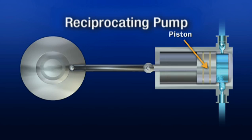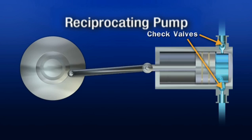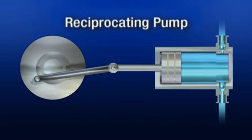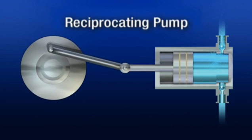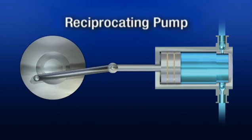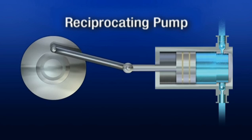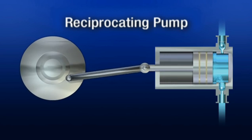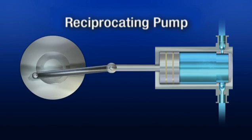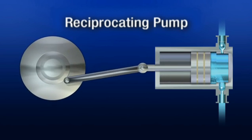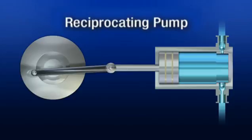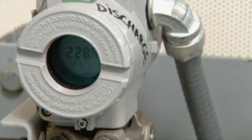Reciprocating pumps have a piston that moves back and forth in the cylinder. Liquid is admitted and discharged through a check valve. These pumps are used with very high pressure applications and where abrasive or potentially hazardous liquids must be pumped. Pumps that feed chemicals for water treatment are a prime example.